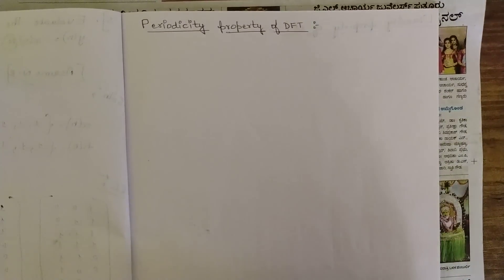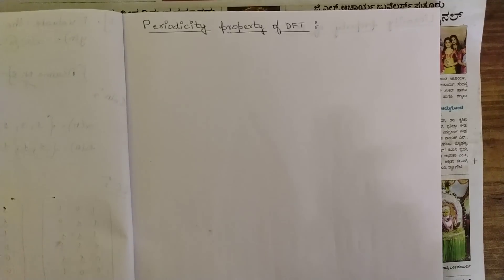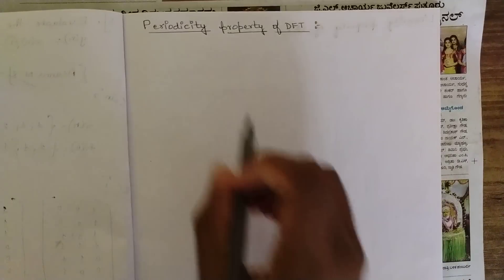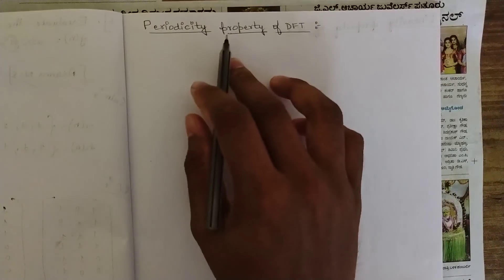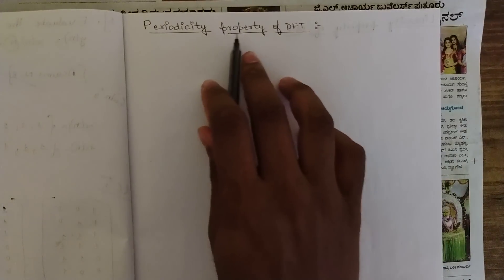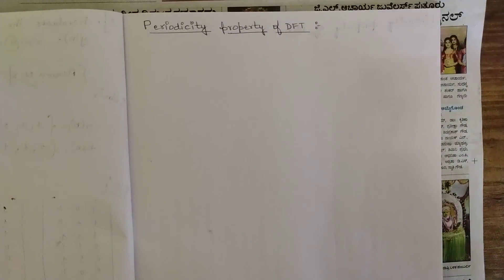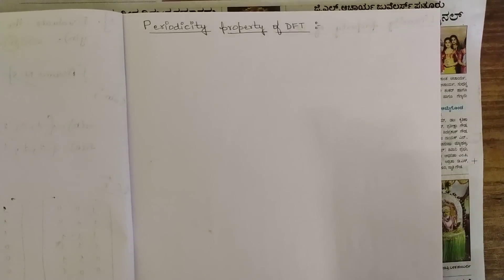Now let's get to this. We have two important properties of the DFT which we are going to discuss in this session. The first one is the periodicity property of the DFT, and the second one is the linearity property. We are going to check the relationships obtained for each of these.